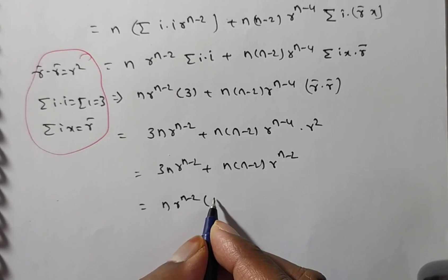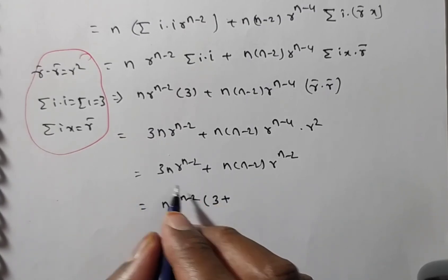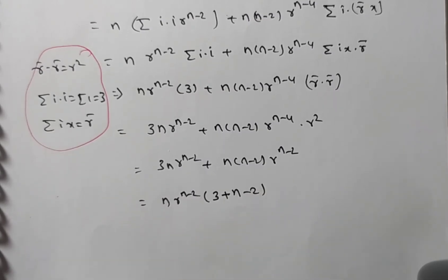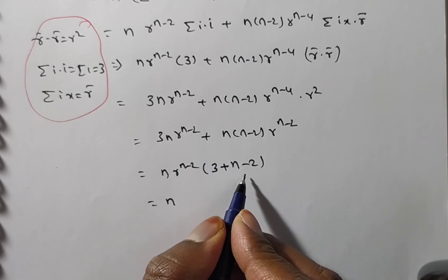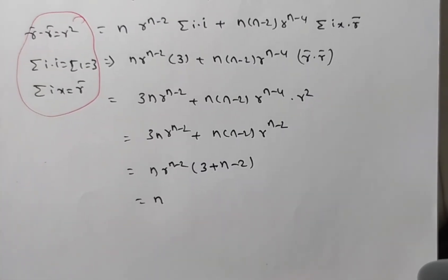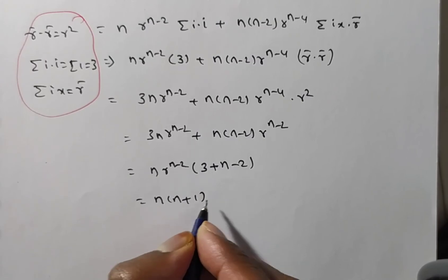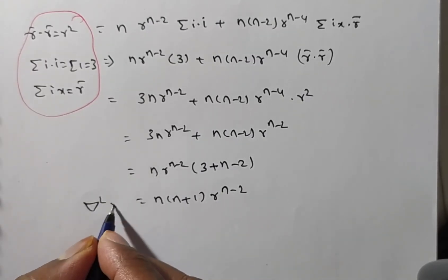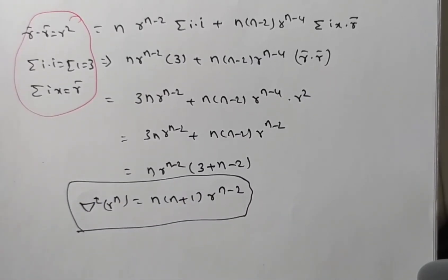Taking n·rⁿ⁻² as common factor: n·rⁿ⁻²·[3 + (n-2)] = n·rⁿ⁻²·(n+1) = n(n+1)·rⁿ⁻². This is the value of del²(rⁿ), which is what we had to prove.